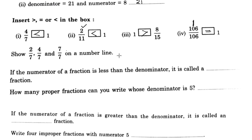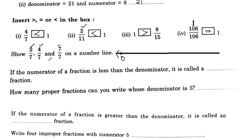Now we have a number line. The numbers are marked between 0 and 1. On the number line we mark: 1 by 7, 2 by 7, 3 by 7, 4 by 7, 5 by 7, 6 by 7, and 7 by 7 is 1.